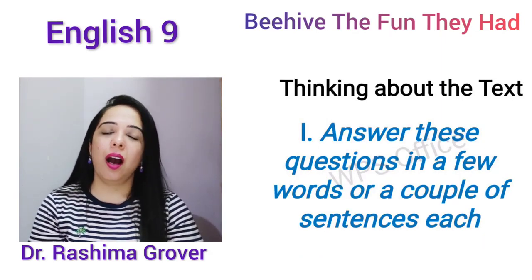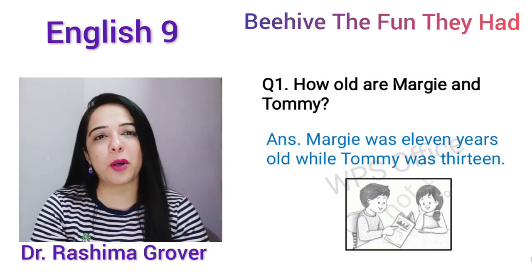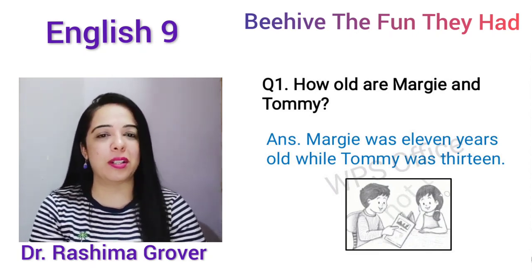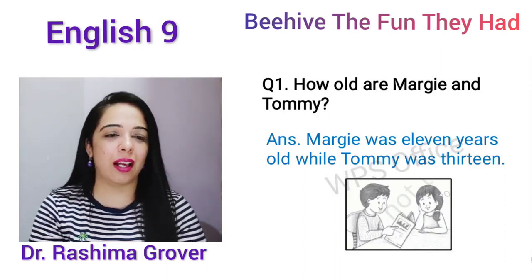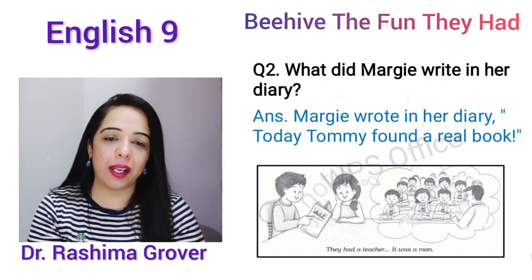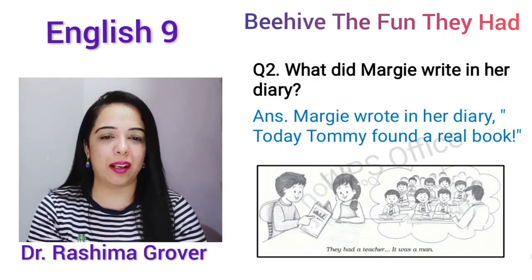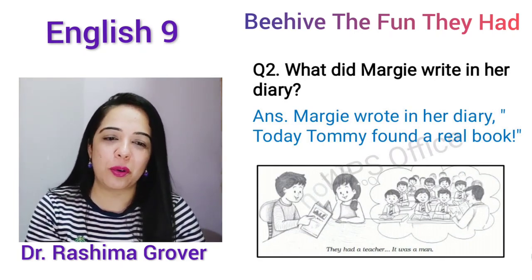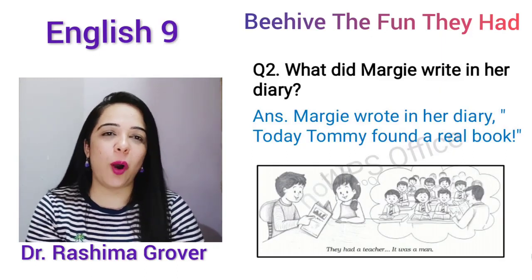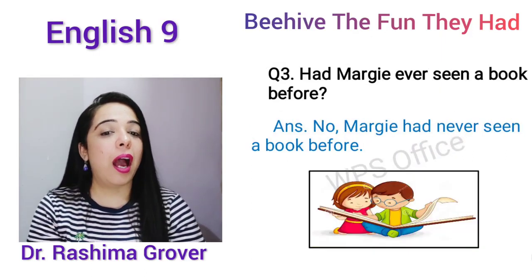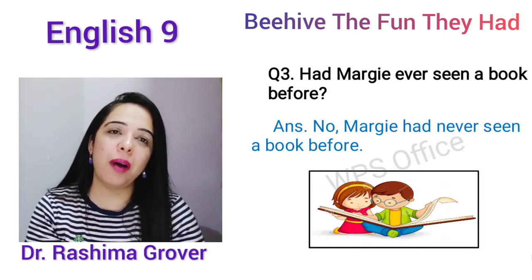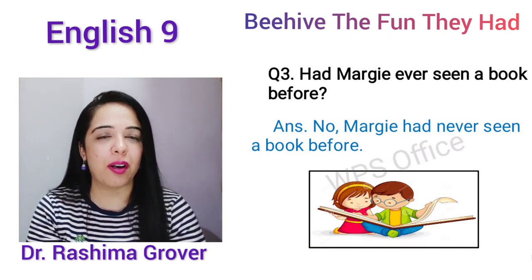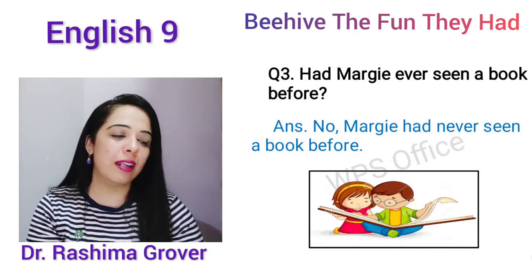Let's have a look at some questions. How old are Margi and Tommy? Margi is 11 and Tommy is 13 years old. What did Margi write in her diary? Margi wrote in her diary: 'Today Tommy found a real book.' Had Margi ever seen a book before? No — Margi ne pehle kabhi koi book nahi dekhi thi.